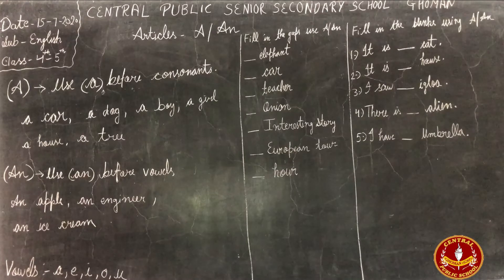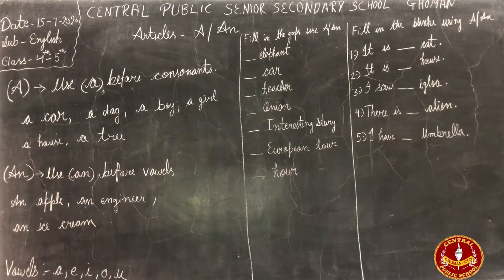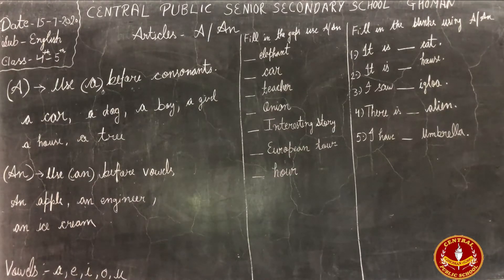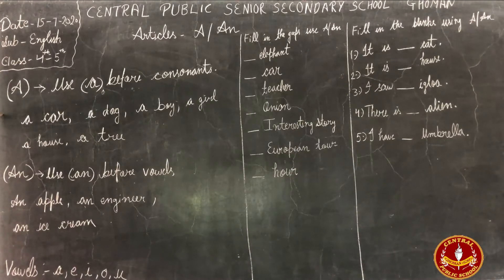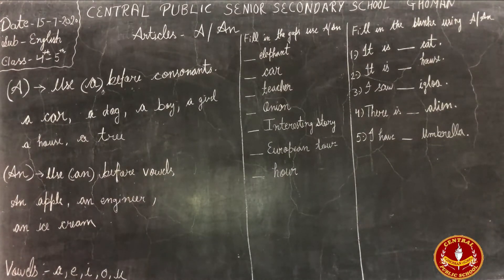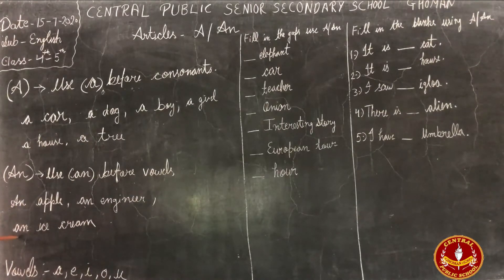Now, words that start with vowels a, e, i, o, u — no word starting with these alphabets takes article 'a'. With those we use article 'an'. And words that start with a vowel sound, before them we use article 'an'. For example: an apple, an engineer, an ice cream.